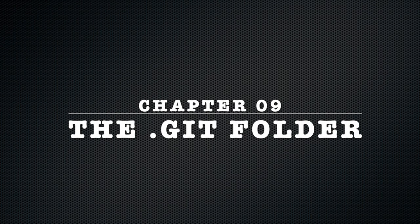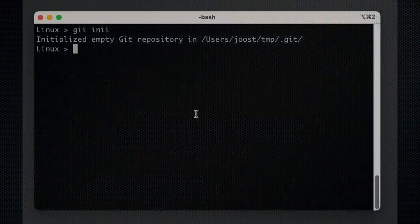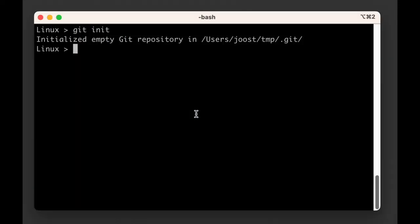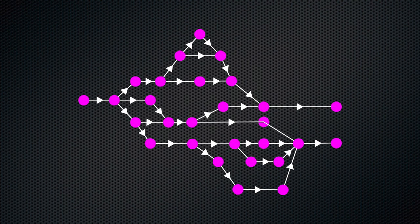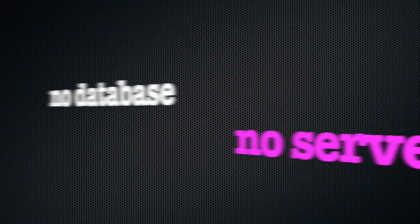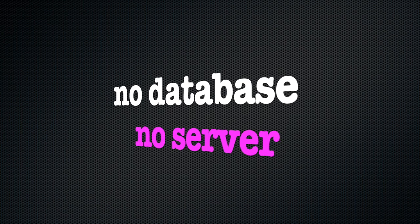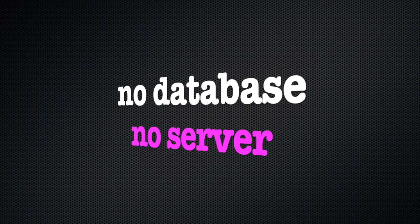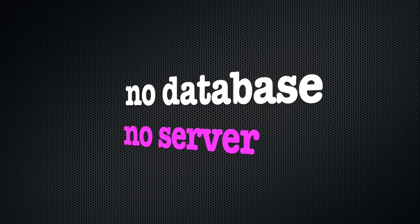Chapter 9: The .git folder. In the top-level folder of our repository, git has created a .git subfolder. This folder is where git will write all of the data in our graph. It's where we store metadata and anything else required for git to do what it does. There is no database, there is no server — it's all just a bunch of files in this mysterious .git folder.